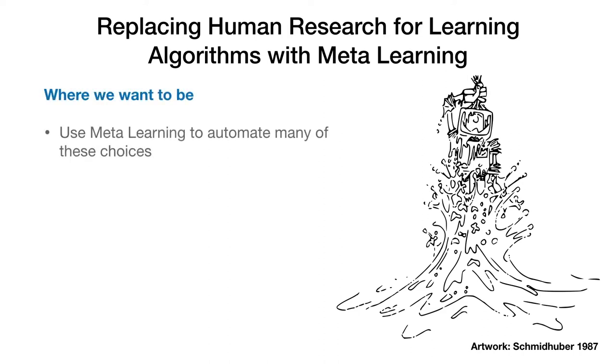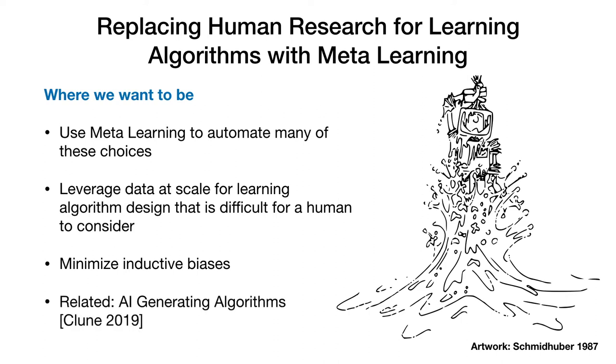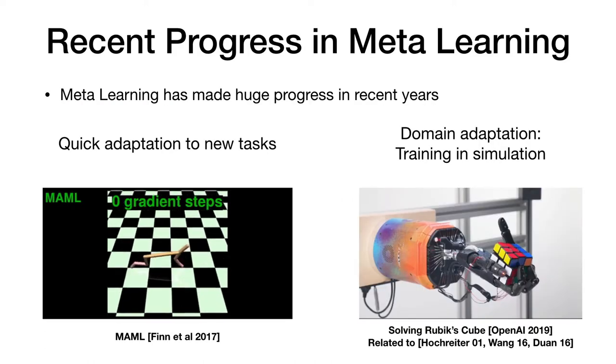Meta-learning promises to automate many of these choices. It gives us the opportunity to leverage data at scale for learning algorithm design that is difficult for a human to consider. In the broadest sense, I like to think of meta-learning as minimizing the inductive biases that we put into our system. These aspirations are very related to the paper on AI-generating algorithms by Jeff Kloon. So let's first look at the current state of meta-learning.